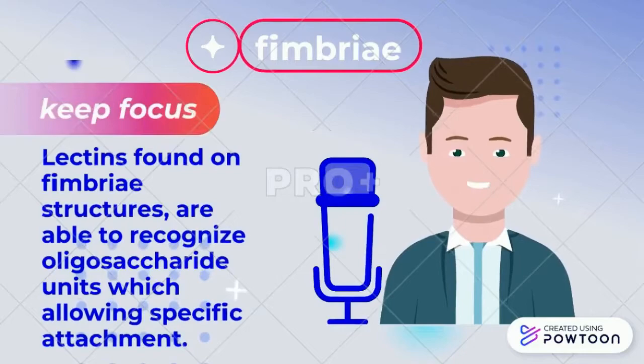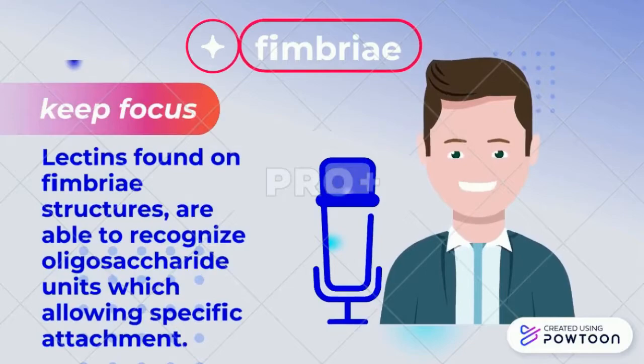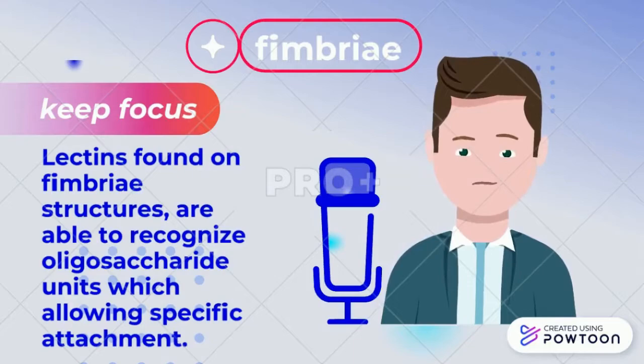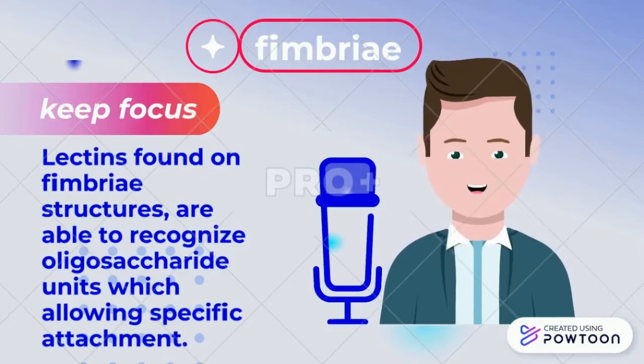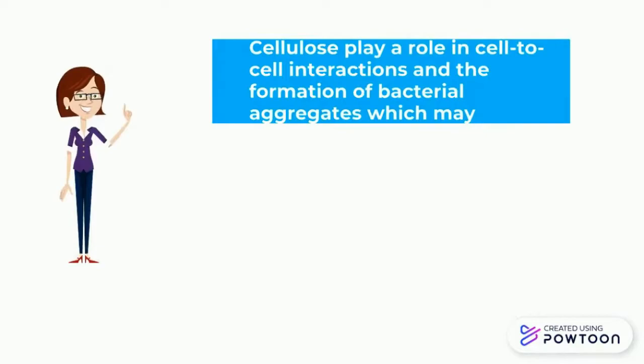Fimbriae are shorter, straighter and more numerous than flagella. The function of adhesins on the fimbrial tip in determining specific attachment properties has been demonstrated. Lectins found on fimbriae and flagella structures are able to recognize oligosaccharide units, allowing specific attachment.